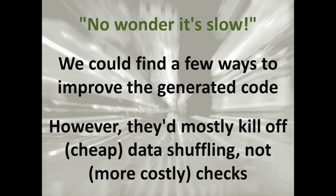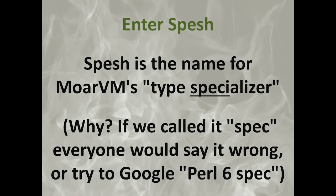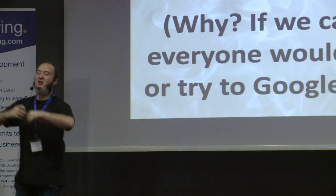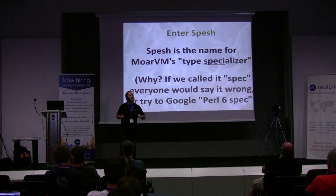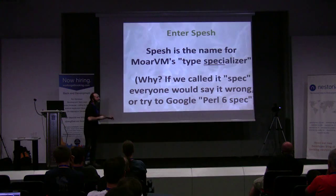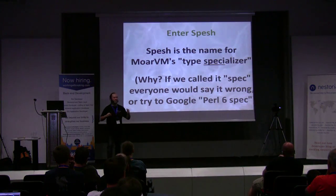You're probably looking at all this code for doing a plus-plus and saying: of course it's going to be a bit slow. We could improve code generation, but if we just statically improved it, we'd only take out a few silly copies — not things like parameter checks, type checks, and all those more costly things. So earlier in the year we got a new subsystem in the VM. We call it a type specializer — we didn't want to spell it 'spec' for short, and we didn't want to typo 'type specializer' every time, so we ended up calling it 'spesh.' It also means we have a unique name so everyone knows we're not talking about the spec.